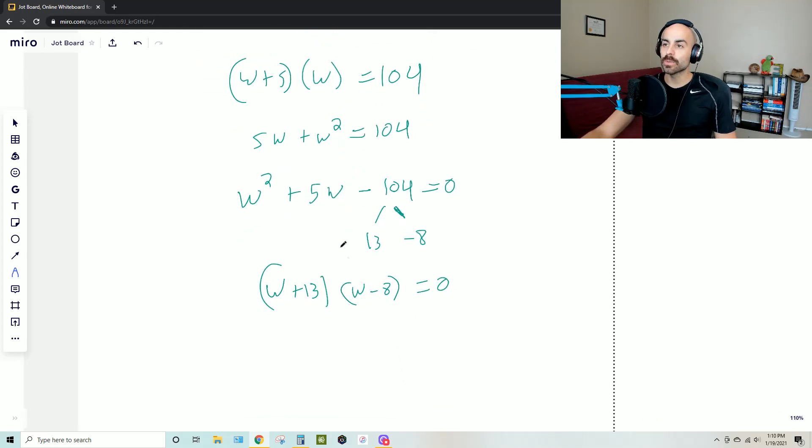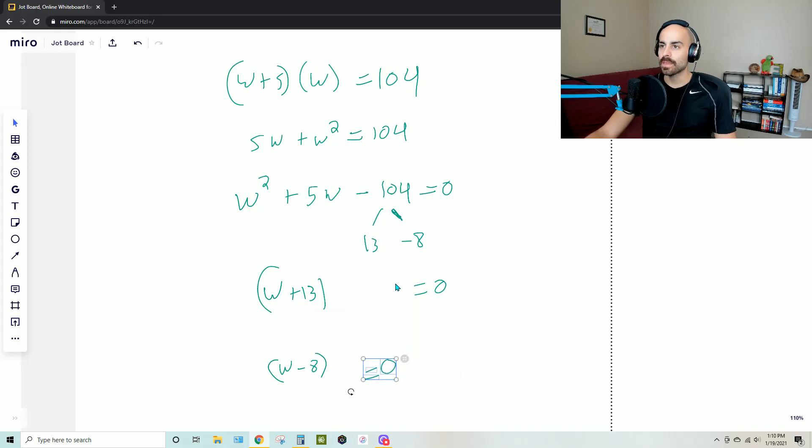Now, what's interesting is that we're going to end up with two widths here, right? Because we got essentially, we can rewrite this as this really, where they both are equal to zero. And then we see that in one case, w equals negative 13, and then w also equals positive eight.